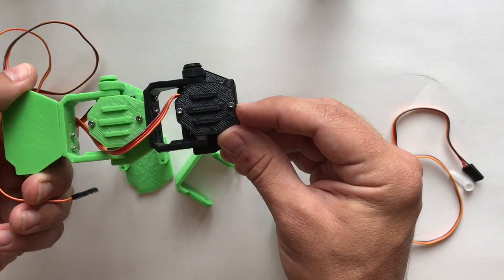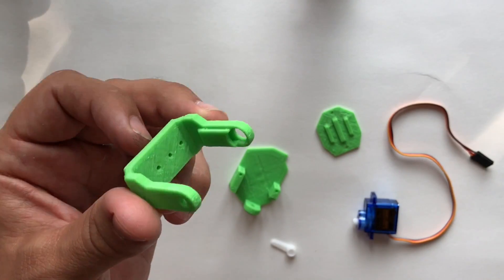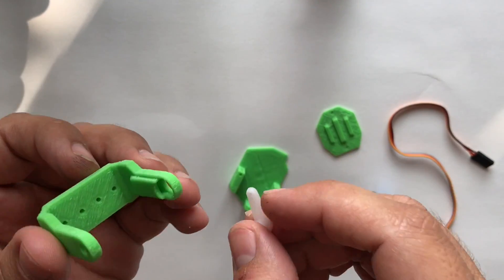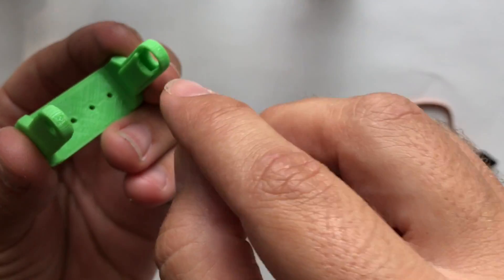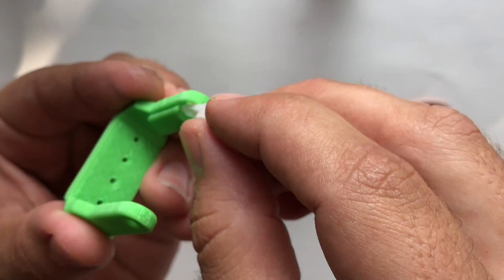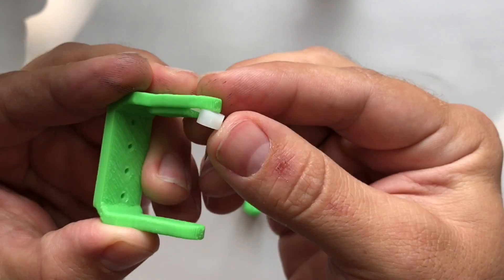You want to get the robot servo arm and take your servo horn and slide it into this little slot here. It should bend in there and you push it in and snap it in like that.